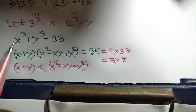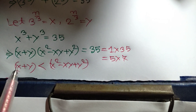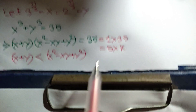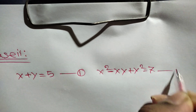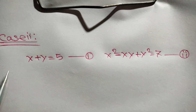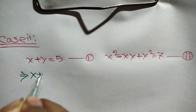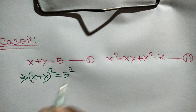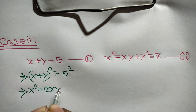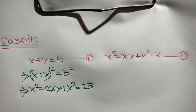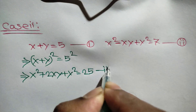Case 2: We write x plus y is equal to 5 — equation 1 — and x squared minus xy plus y squared is equal to 7 — equation 2. Squaring both sides of equation 1, we can write x squared plus 2xy plus y squared is equal to 25 — equation 3.